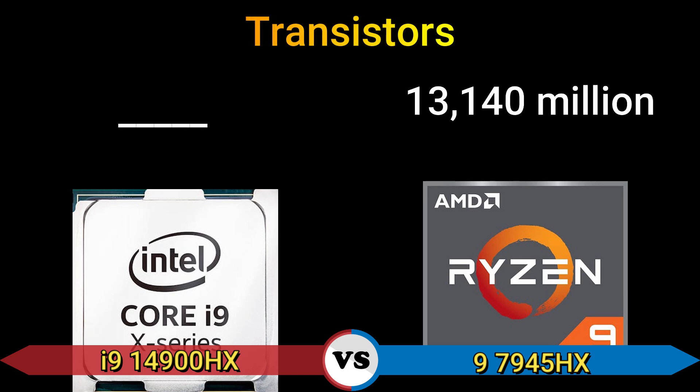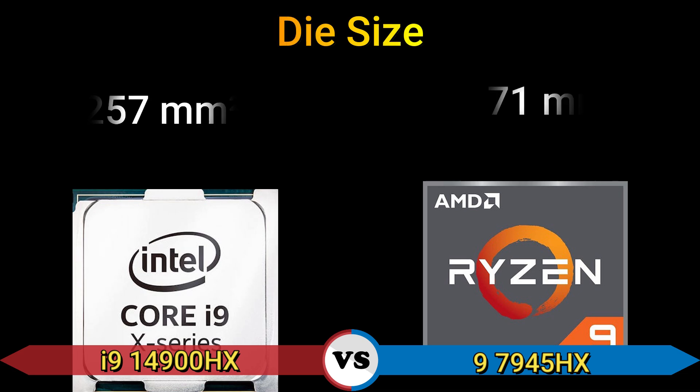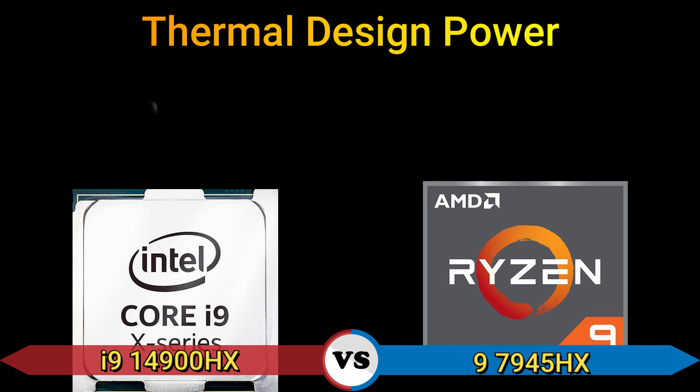Transistors: 13,140 million. Die size: 257 millimeter and 2 × 71 millimeter. Thermal design power: 55 watts.